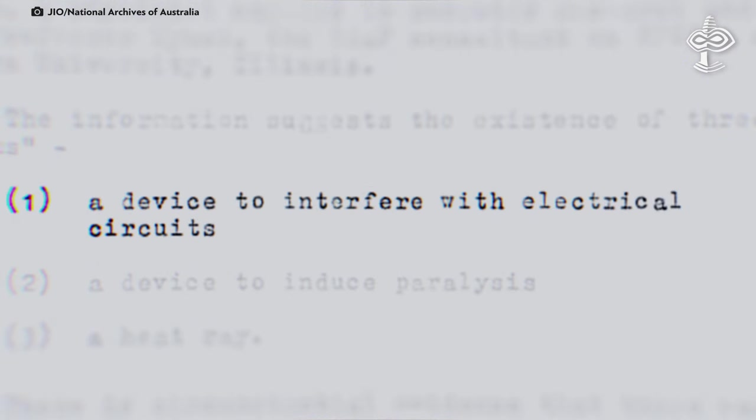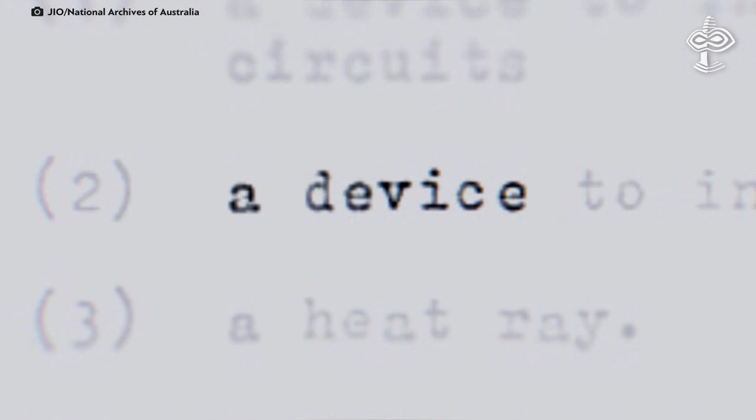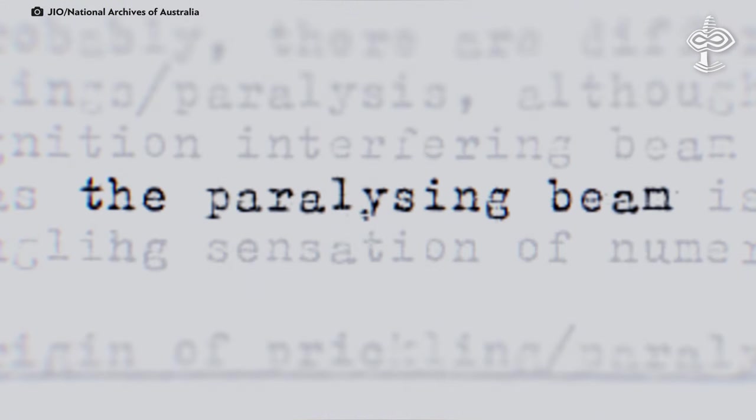Some information suggests that there were three so-called weapon systems. One was a device to interfere with electrical circuits, and the second was a device to induce paralysis that was able to intercept control of the body, very similar to a man-in-the-middle cyberattack.